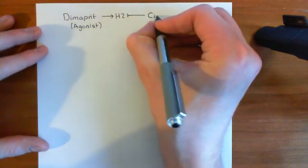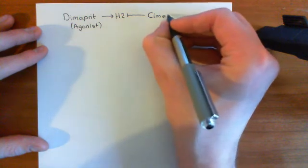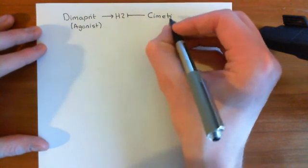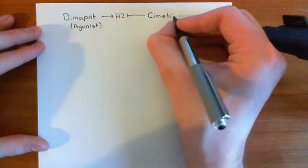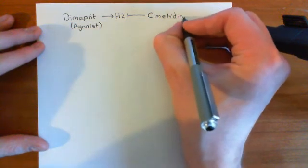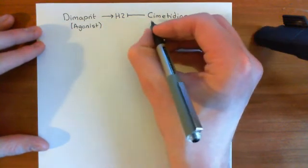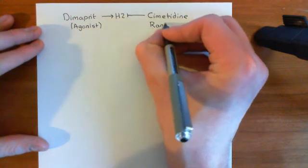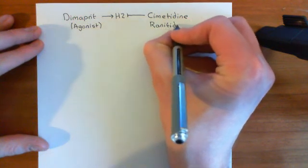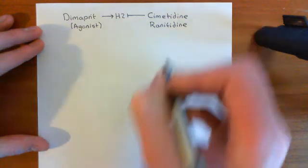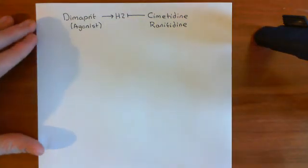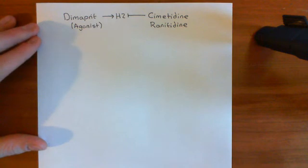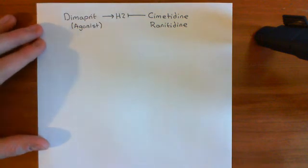There are also competitive antagonists for H2 receptors which will bind to the H2 receptor and block histamine from being able to bind there, hence preventing activation. These drugs are used to prevent gastric acid secretion, and the two main examples are cimetidine and ranitidine. Cimetidine and ranitidine are both competitive H2 receptor antagonists, and they're selective for H2 over H1 and H3.